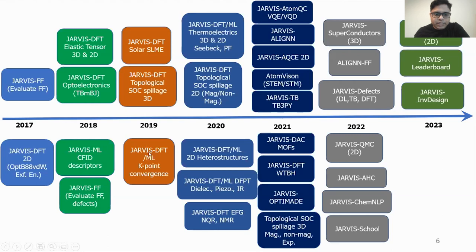In 2019, we emphasized the enforcement of k-point convergence in DFT databases, and developed topological spin-orbit splitting criteria for topological materials and solar cell efficiency. In 2020, we did the DFT and ML approach for 3D and 2D materials, and for NMR, NQR, and piezoelectric materials and heterostructures.